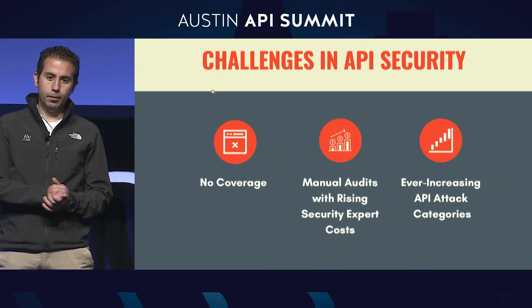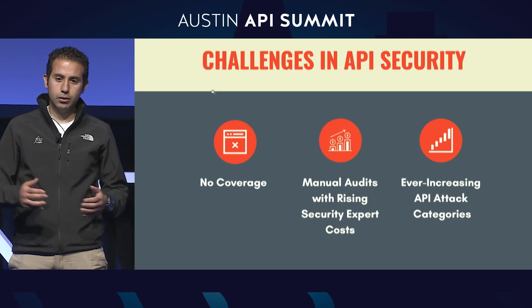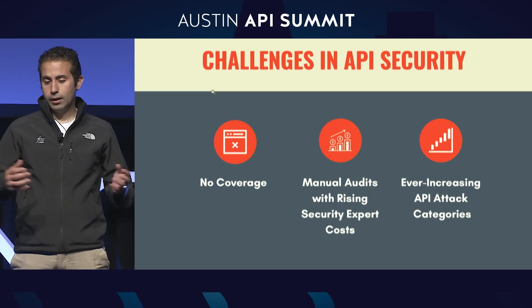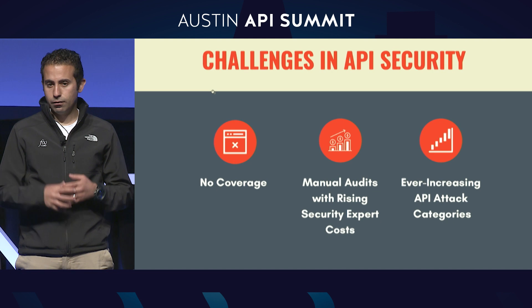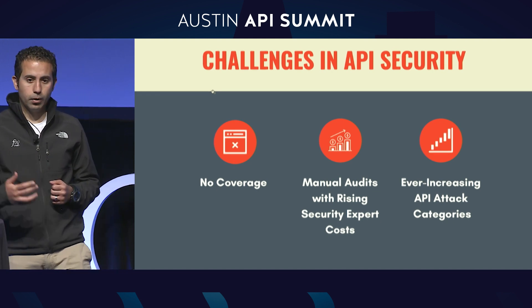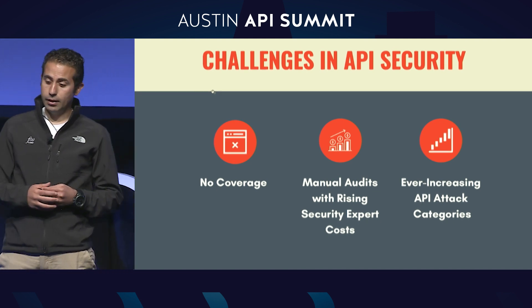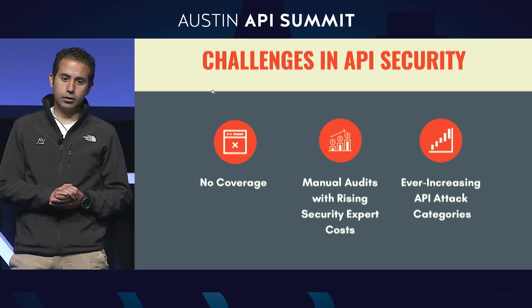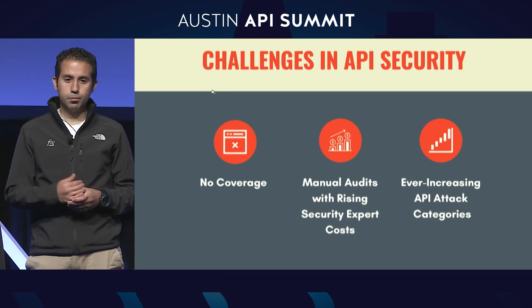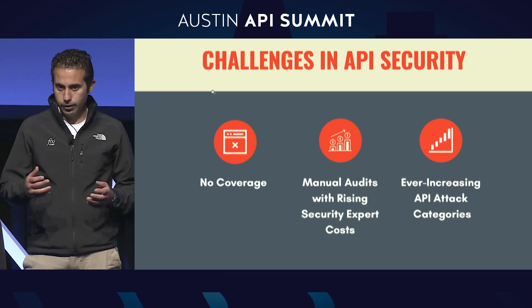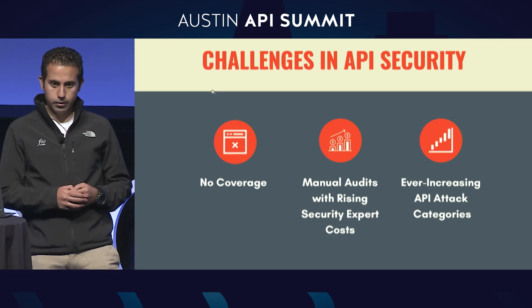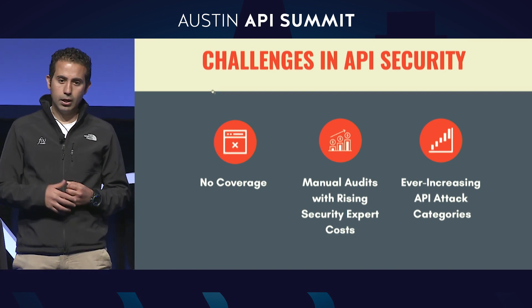If you look at APIs today, there's no question that APIs drive almost any kind of application. It's the visible backbone where all the data and the requests get processed. And as a result of that, it exposes a very large surface area for attacks, and that's pretty much evident in all the latest hacks that we've been reading about in the news. The challenge with securing your APIs is that many companies fail to have API security coverage to begin with.